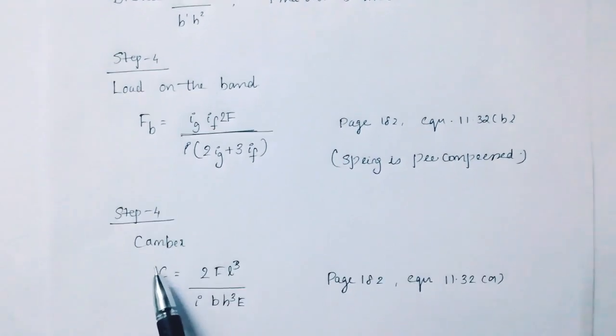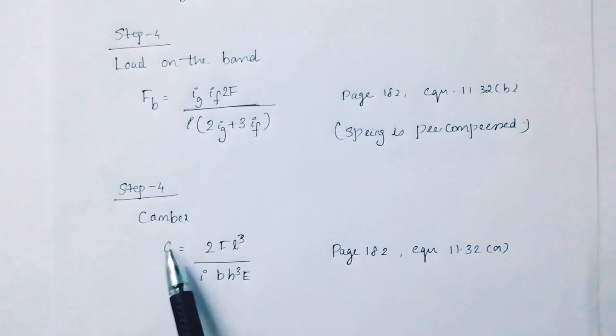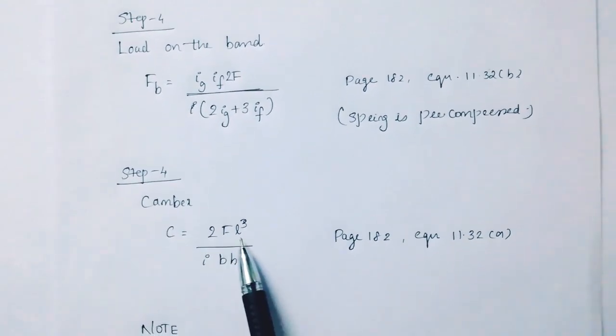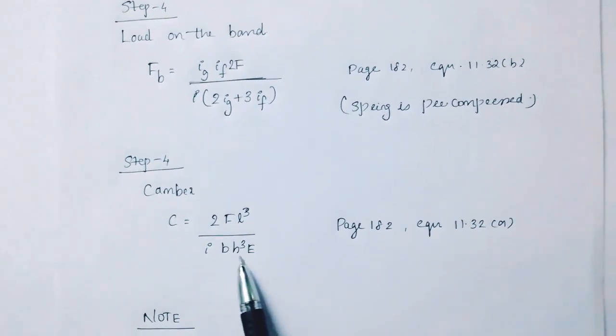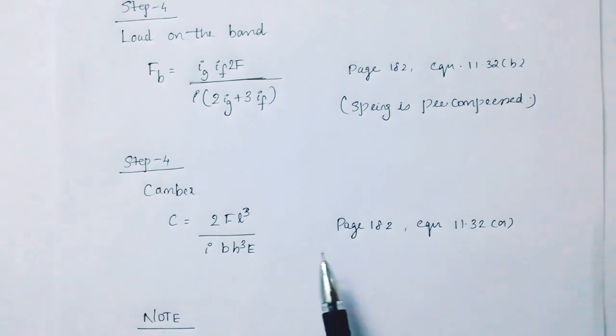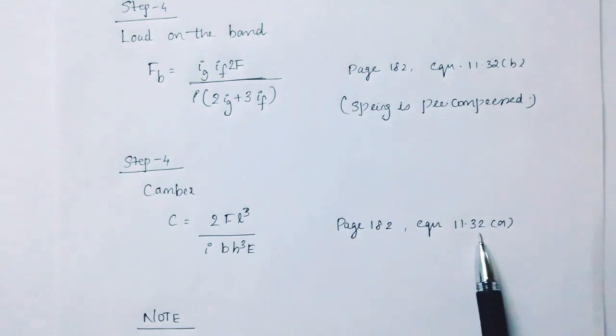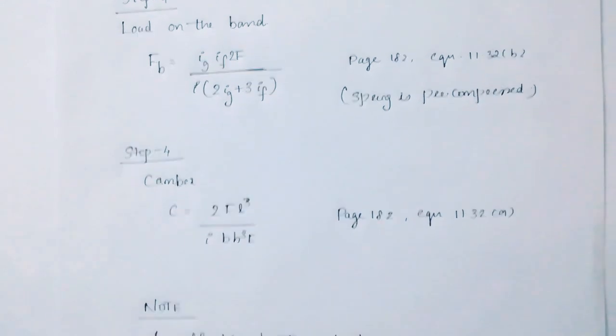Step 4 is also to find out camber. The camber equation is 2fl-cubed divided by i into b'h-cubed into E. Page number 192, equation 11.32a.